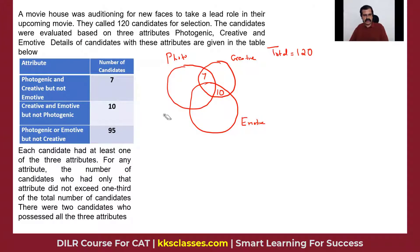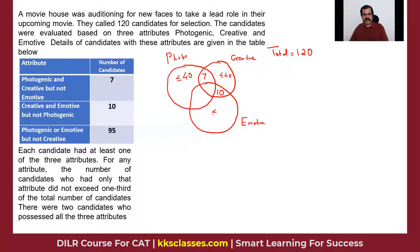Each candidate has at least one of the three attributes, so none are outside. For any attribute, the number of candidates who had only that attribute did not exceed one-third of the total — so less than or equal to one-third of 120, which is 40. There are also two candidates who possess all three. So I'm assigning: A = only photogenic, B = only creative, C = only emotive, Y = only photogenic and emotive. A ≤ 40, B ≤ 40, C ≤ 40.